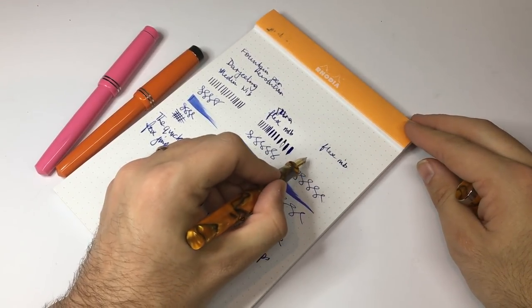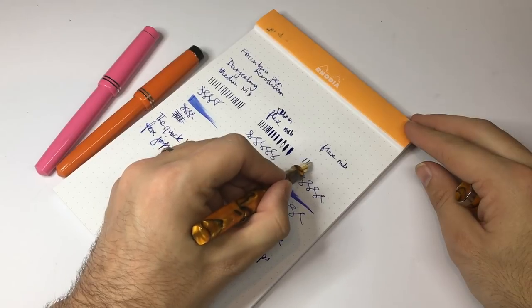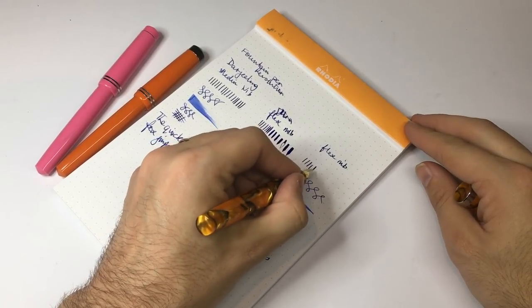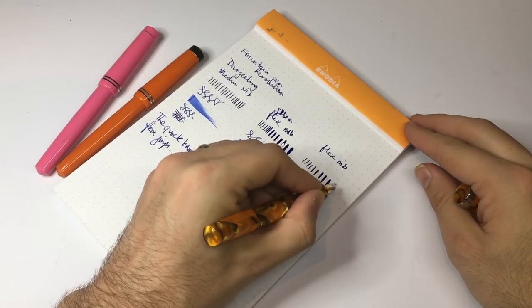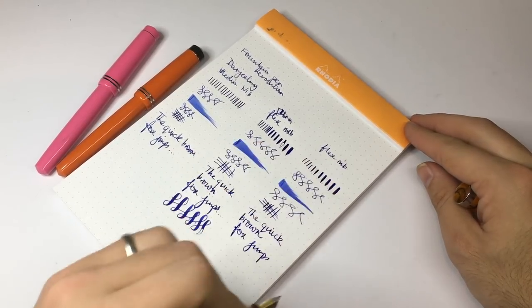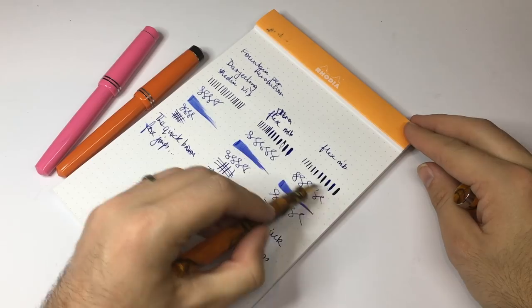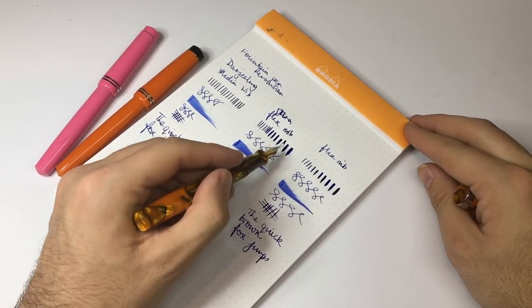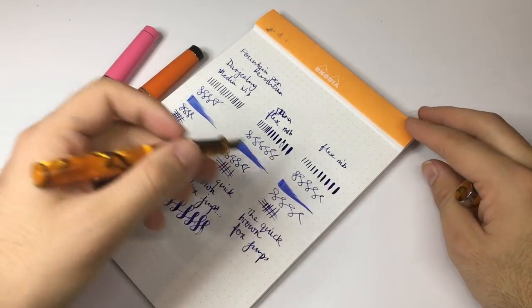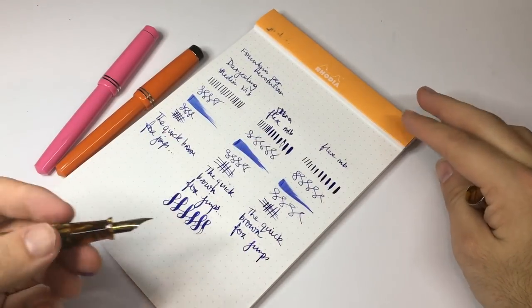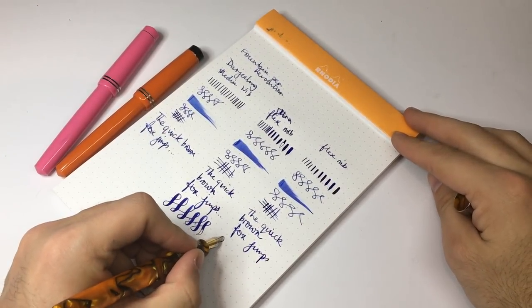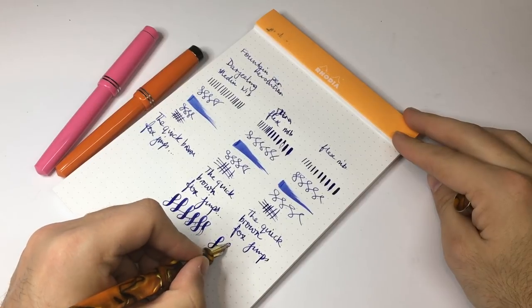But let's see up here with the rest alongside this other nib. So no pressure, start to add some pressure, and that's about as far as we're going to get this nib. So the line variation isn't as noticeable or as wide as on the ultra flex.